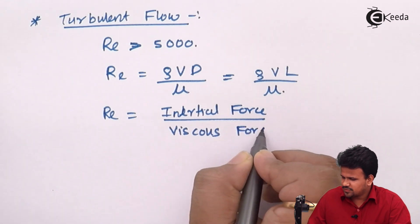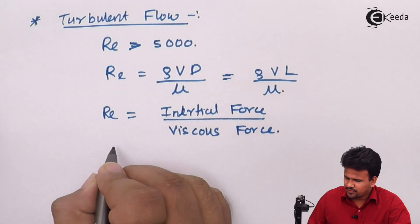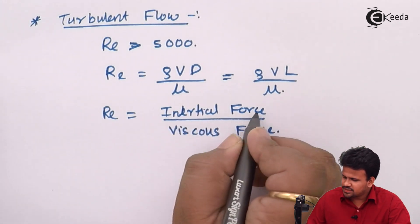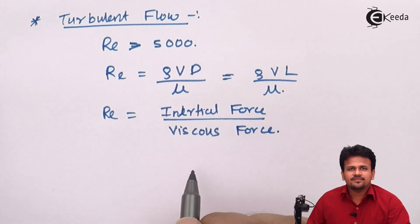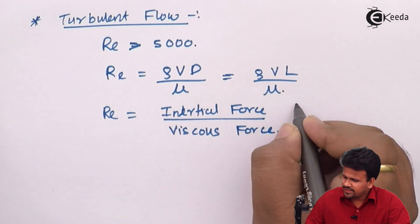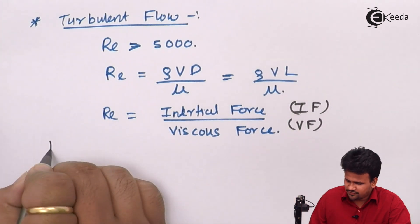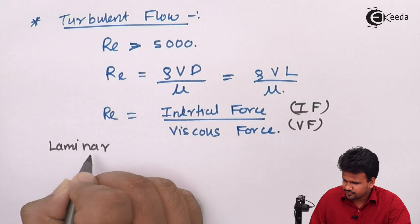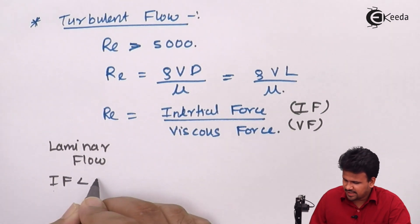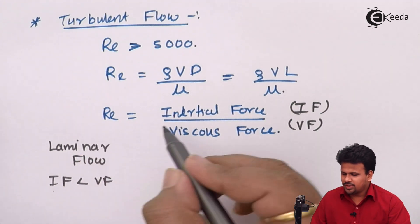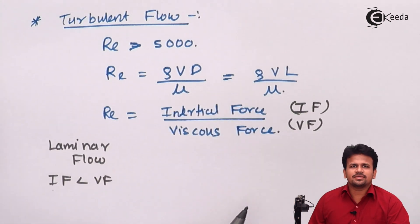So that is what Reynolds number is. Now in laminar flow, if I denote inertial force by IF and viscous force by VF, the inertial force is less than the viscous force — that is, the viscous force dominates the inertial force.